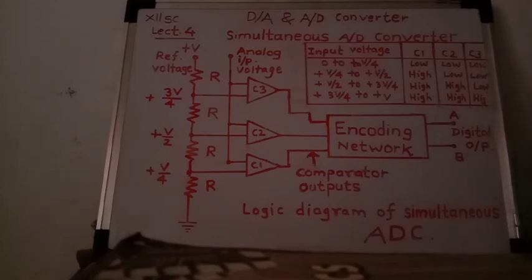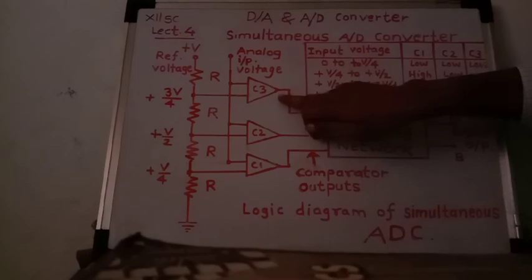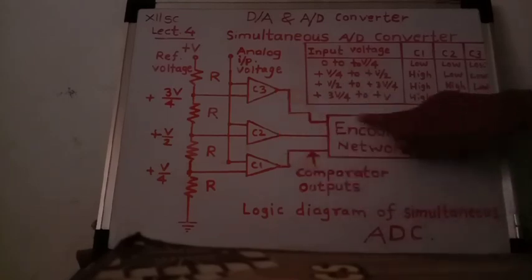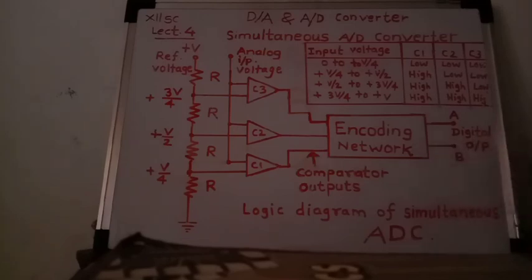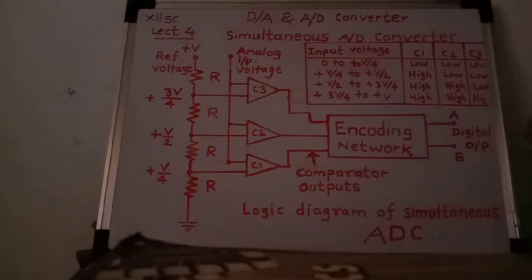The outputs of these comparators are fed to the encoding device. The encoding network provides the digital output, and these bits are then stored in a register constructed from flip-flops.